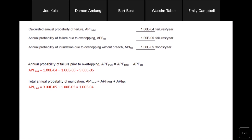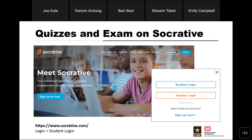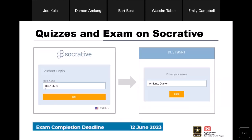Any questions on those quiz questions? If nobody has any questions, let's talk about the final exam. There will be no separate quiz for Module 6 — those questions are embedded within the final exam. We'll access the final exam the same way we've accessed all other quizzes, via SOCRATIVE. Go to the SOCRATIVE website, click Student Login, and the room name is DLS 105 R6. The exam will be 25 questions.